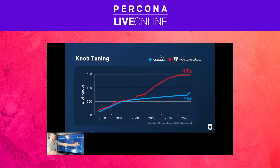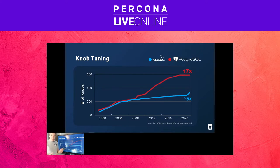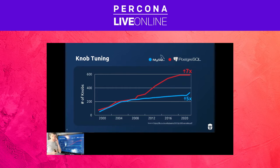Not all of these knobs will affect performance — some are file names, port numbers, host names — things you set once and leave alone, because otherwise the system wouldn't operate correctly. But there are still enough knobs that will affect performance, and at this scale, this is not something that humans can easily reason about.